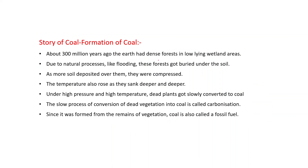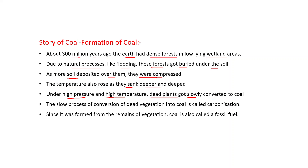How was coal formed? About 300 million years ago, the Earth had dense forests in low-lying wetland areas. Due to natural processes like flooding, these forests got buried under the soil. As more soil deposited over them, they were compressed and the temperature rose as they sank deeper. Under high pressure and high temperature, dead plants slowly converted to coal. Since coal contains carbon, this slow process is called carbonization. Because it was formed from the remains of vegetation, coal is also called a fossil fuel.